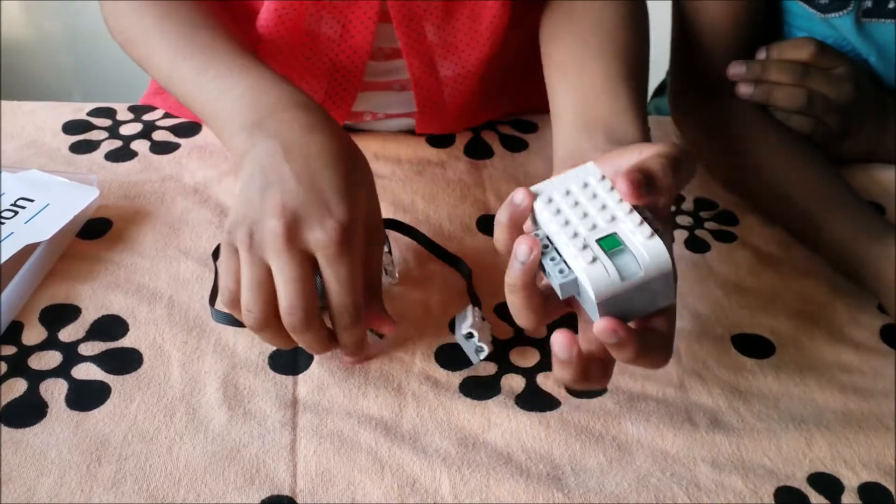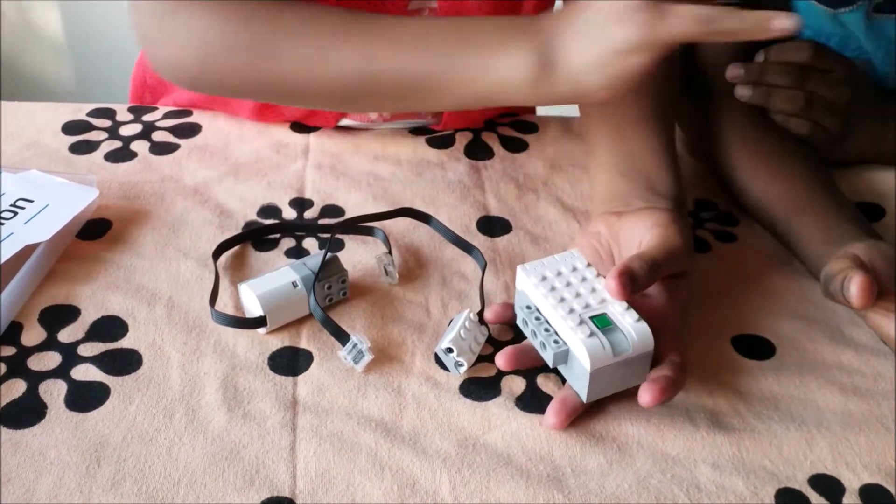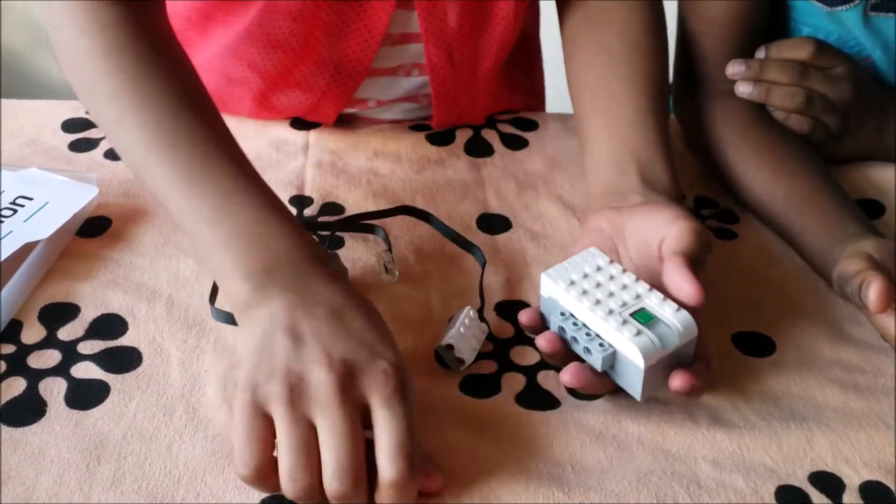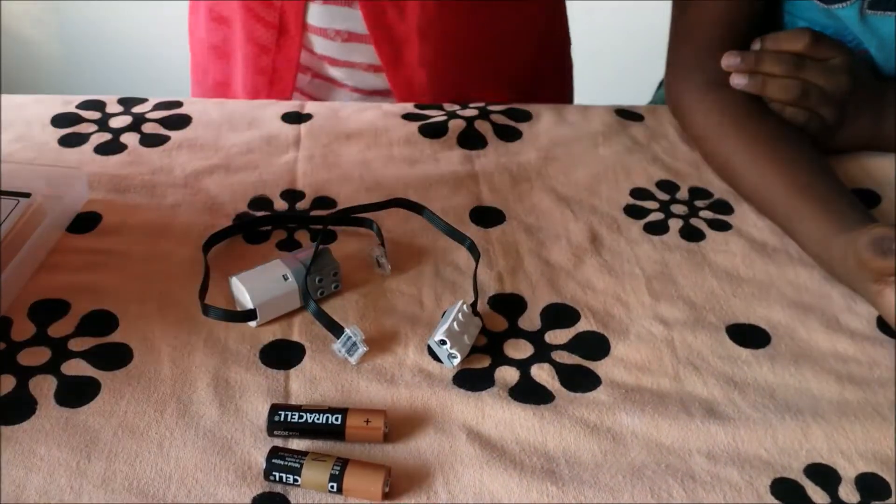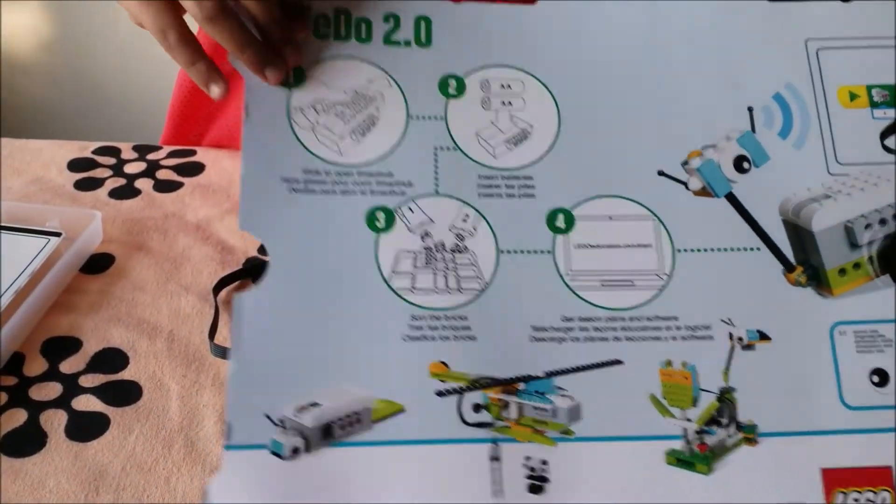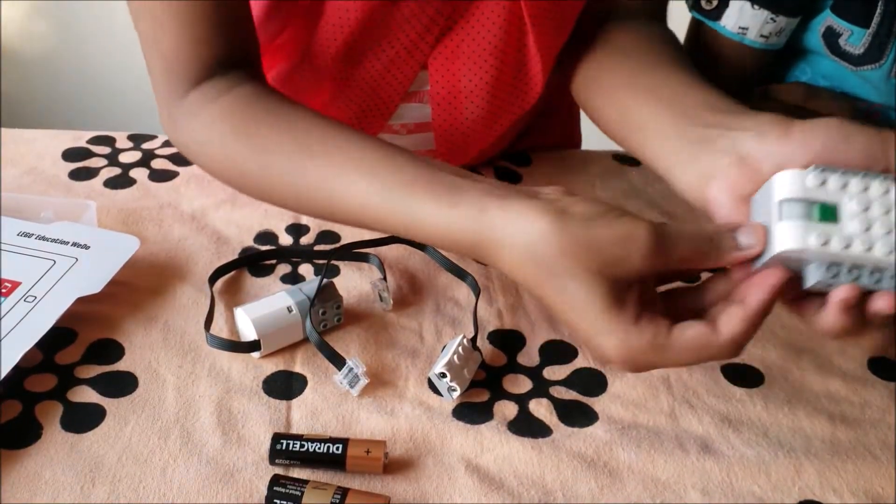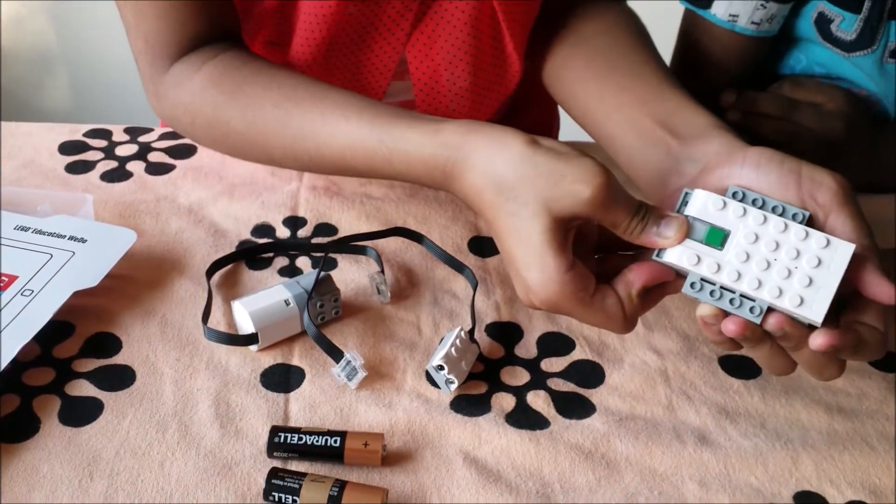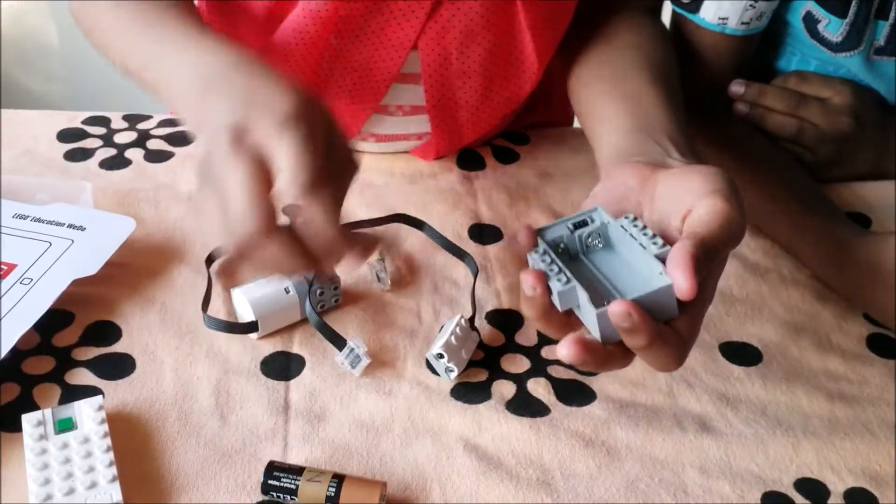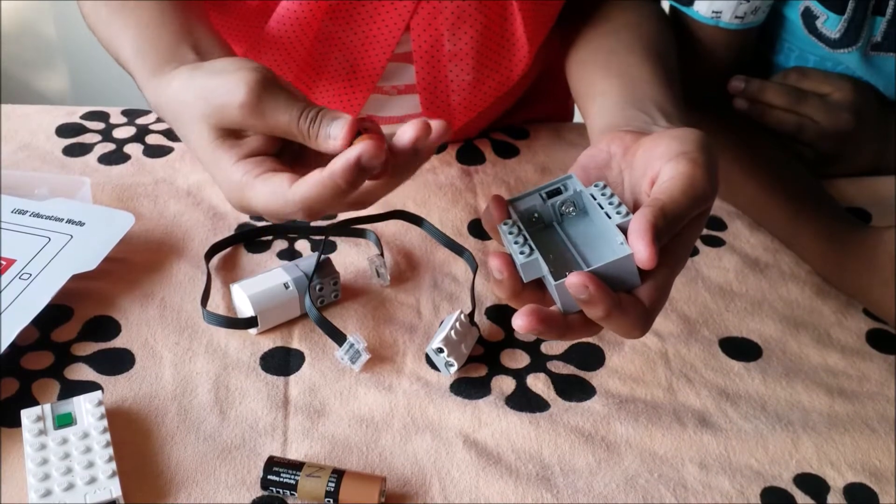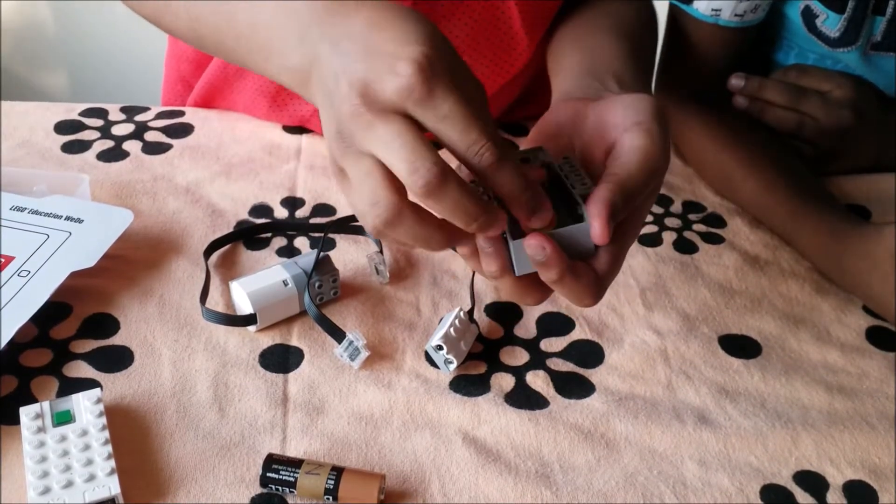You need batteries. Batteries are not included in the kit; you can use your own. First, over here, as you can see, these are the instructions to install the batteries. Okay, first you press gently like this, and next take this out. See, over here it says plus, and here minus. So plus goes here and minus over there.